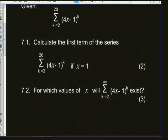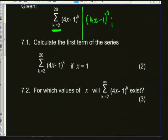To explain sigma notation: the first term is found by substituting k = 2, giving (4x − 1)². The second term uses k = 3, giving (4x − 1)³. The third uses k = 4, and so on. For question 7.1, calculate the first term of the series if x = 1.